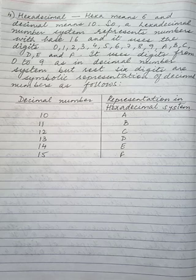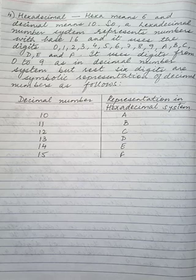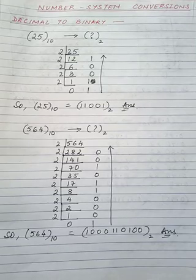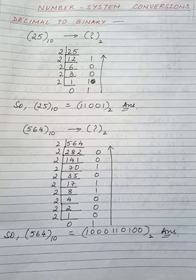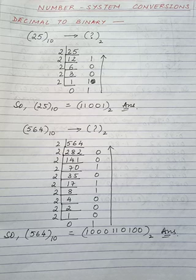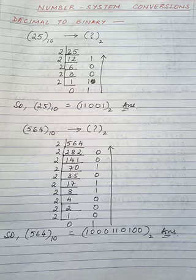We will be learning about the conversions from one number system to another in this chapter. Some of the conversions you must have done in class 7 and 8 — we will be revising them here. The first type of conversion is decimal to binary. To convert a number from decimal to binary, we divide the decimal number by 2, obtain the quotient and remainder, then divide the quotient by 2 again and again. We repeat the steps unless the quotient becomes 0. Finally, the remainder values are written from bottom to top to get the equivalent binary number.